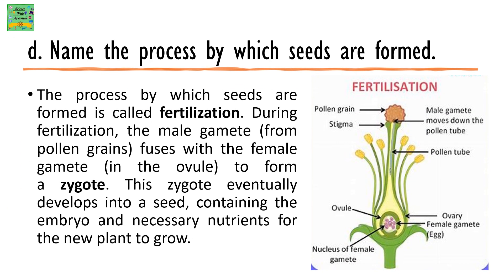Name the process by which the seeds are formed. The seeds are formed by the process of fertilization. During fertilization, the male gamete — that is the pollen grains — fuses with the female gamete, that is the egg present in the ovule, to form a zygote. This zygote eventually develops into a seed containing the embryo and necessary nutrients for the new plant to grow.